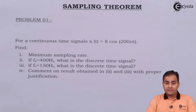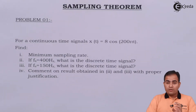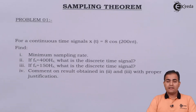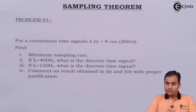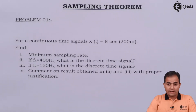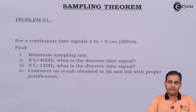By proper justification, we mean whether in part 2 or in part 3 an aliasing error is present or not — and that totally depends on our Nyquist rate or Nyquist frequency. So first we will calculate the Nyquist rate or Nyquist sampling rate, and then proceed to the second and third parts.